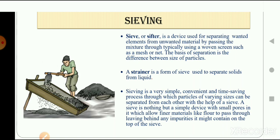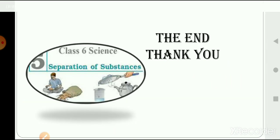In the next video we will talk about the separation of insoluble solids from liquid and soluble solids from liquid. Today we discussed four methods: hand picking, threshing, winnowing, and sieving. I hope you all understood these four methods, and in the next video we will discuss the remaining methods of separating substances. Thank you, students.